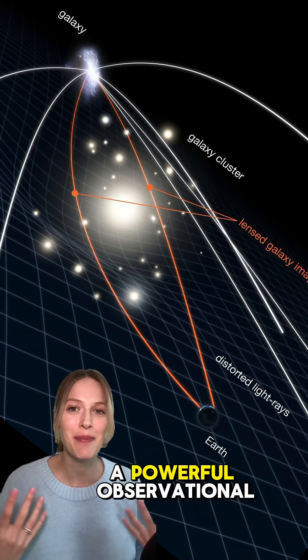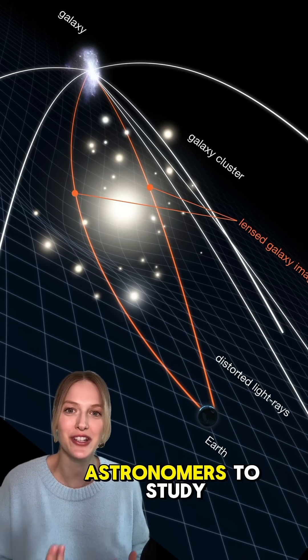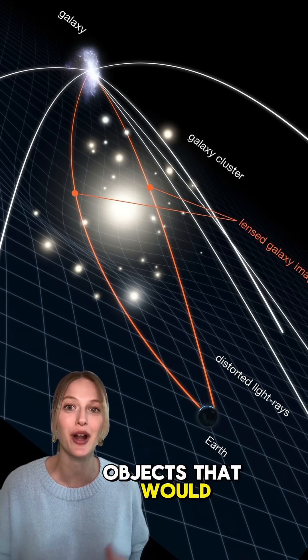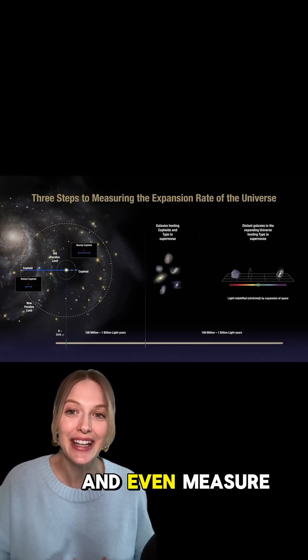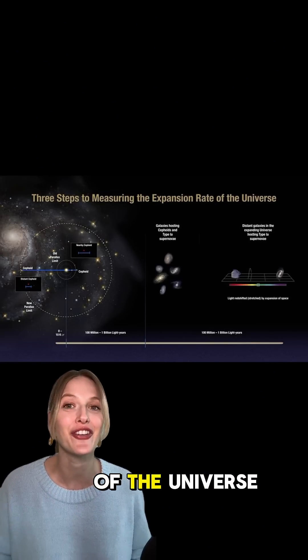Gravitational lensing is a powerful observational technique because it enables astronomers to study objects that would otherwise be too faint or distant, helps them probe dark matter, and even measure the expansion rate of the universe.